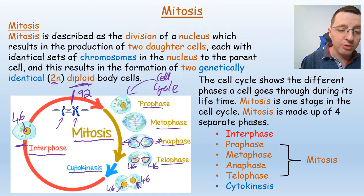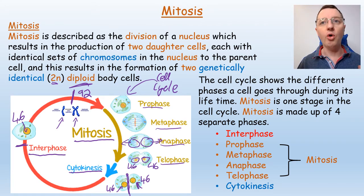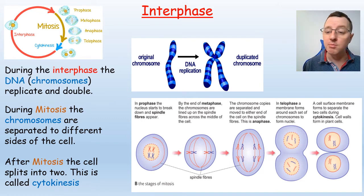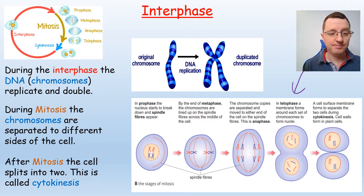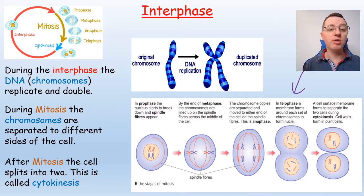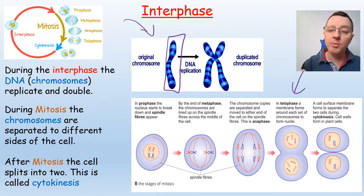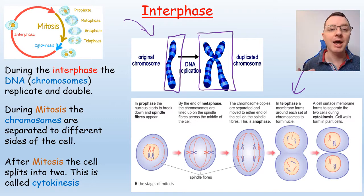The last part of a cell's life is called cytokinesis. During cytokinesis the cell membrane itself will begin to split, and all the organelles of the cell — the mitochondria, the ribosomes — will be shared equally between the two new cells that are formed. To summarize: during interphase the chromosomes replicate and double; during mitosis the chromosomes are separated to different sides of the cell; and after mitosis the cell splits into two during cytokinesis.